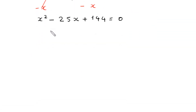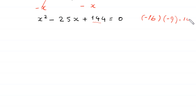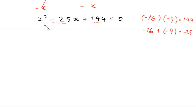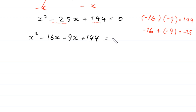This is a quadratic equation and it is factorable. The product of negative 16 and negative 9 equals 144, and the sum of negative 16 and negative 9 equals negative 25. So we rewrite this equation as x squared minus 16x minus 9x plus 144 is equal to 0.